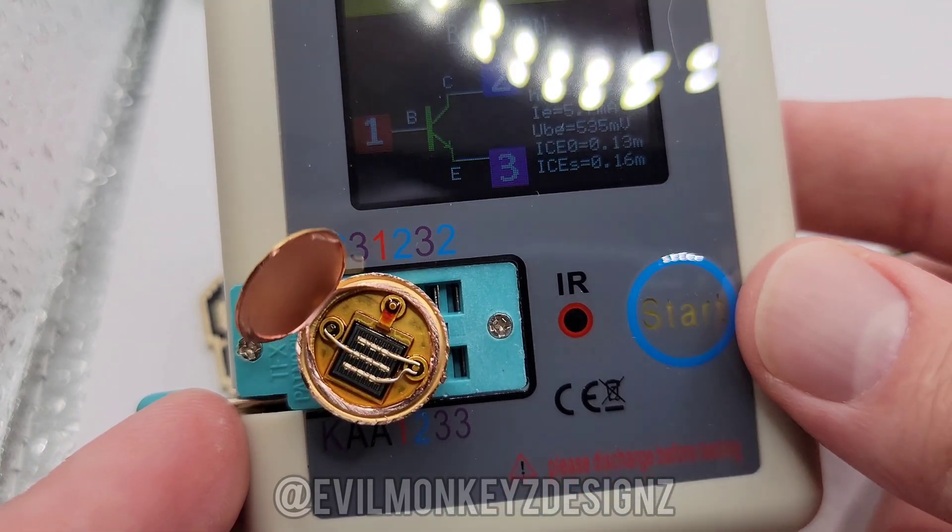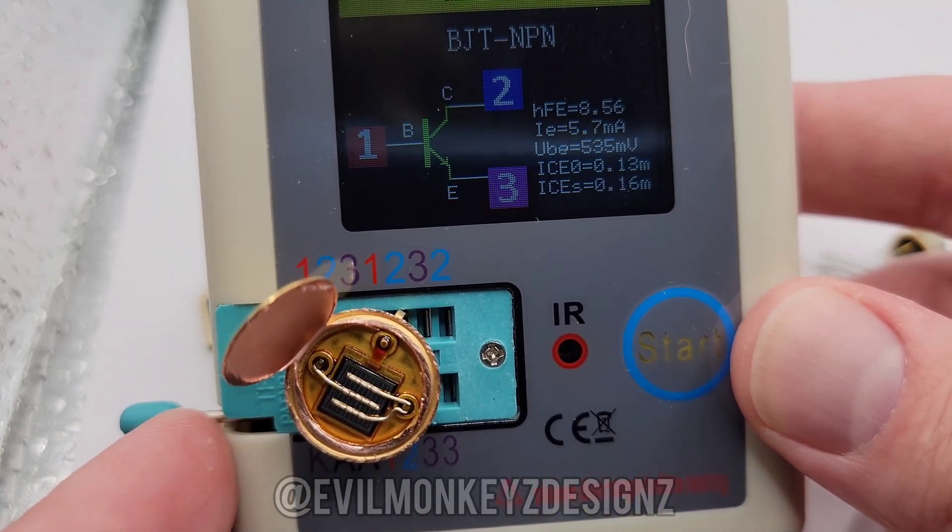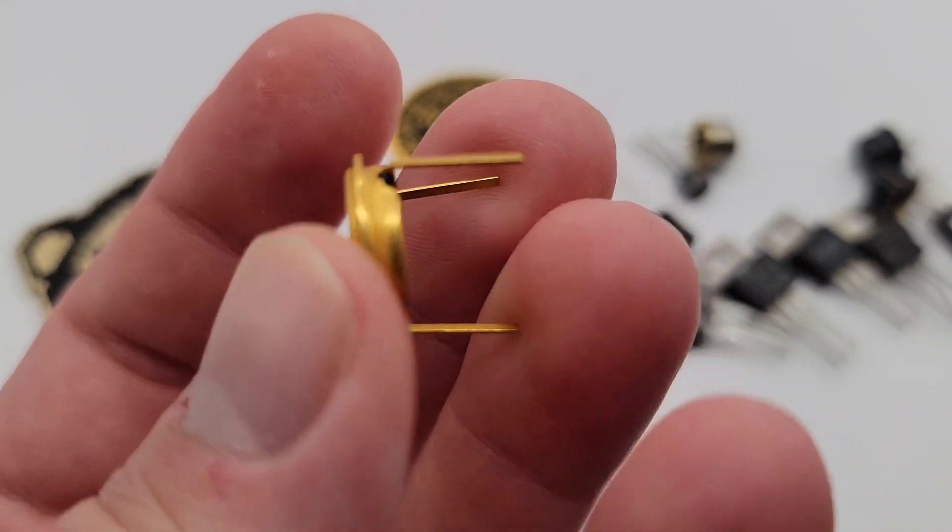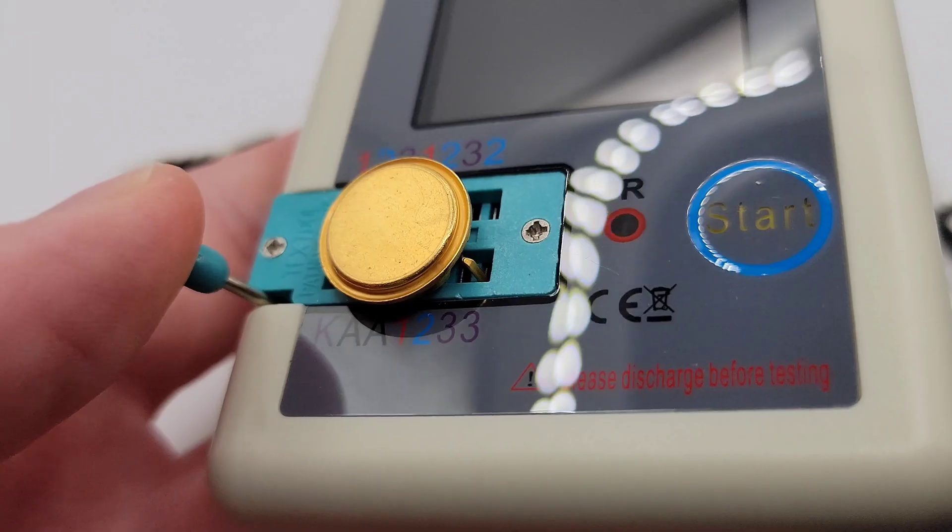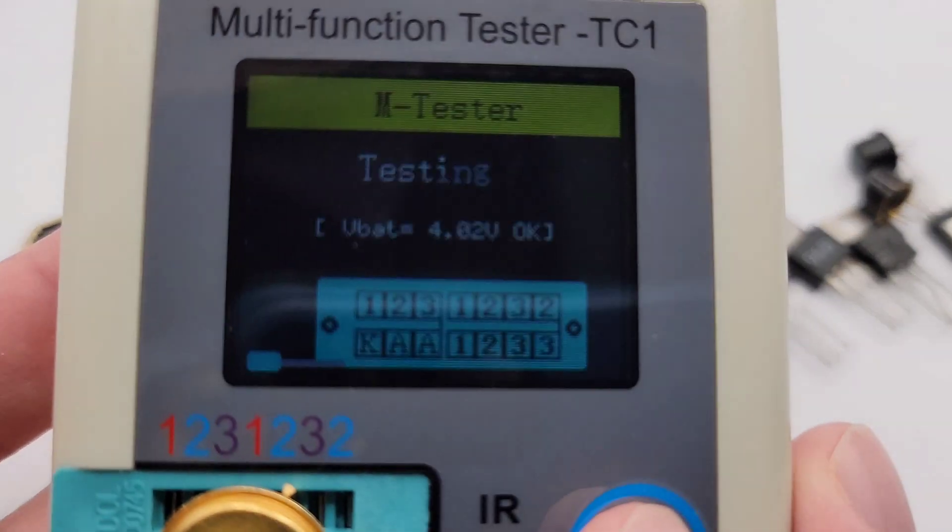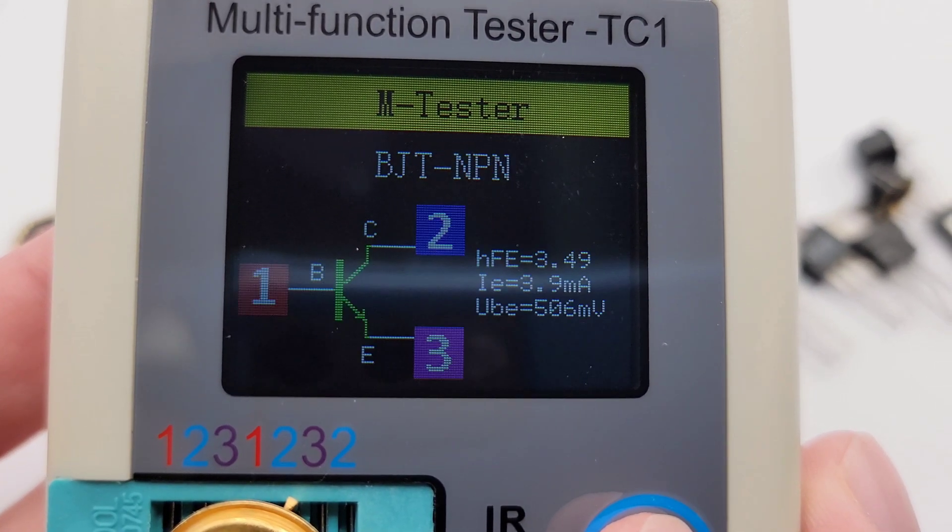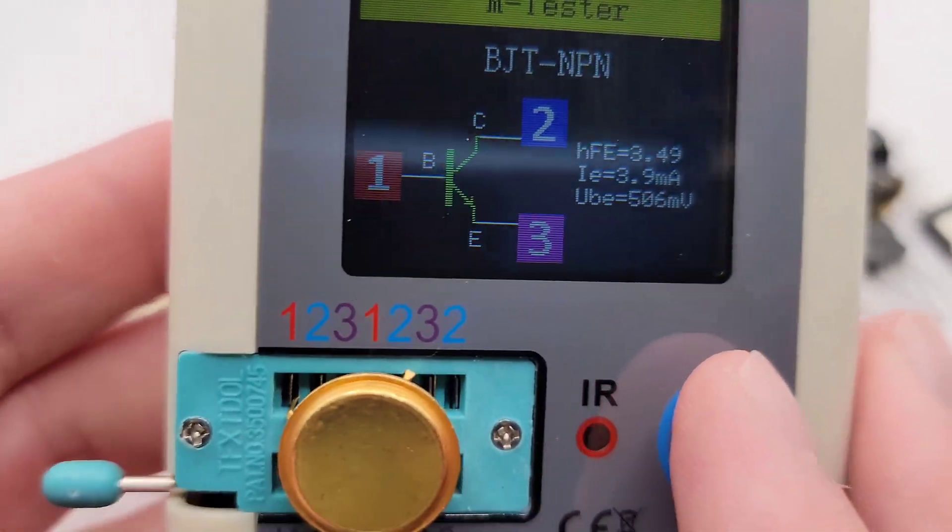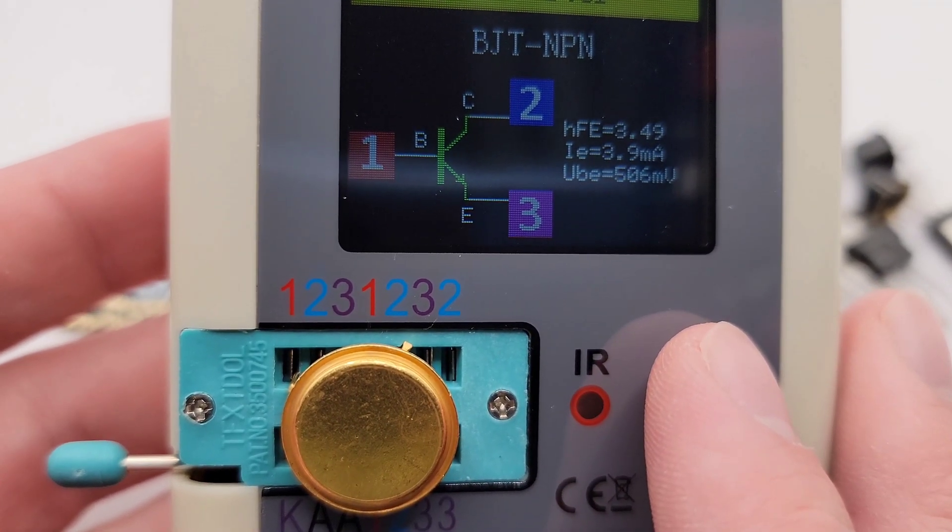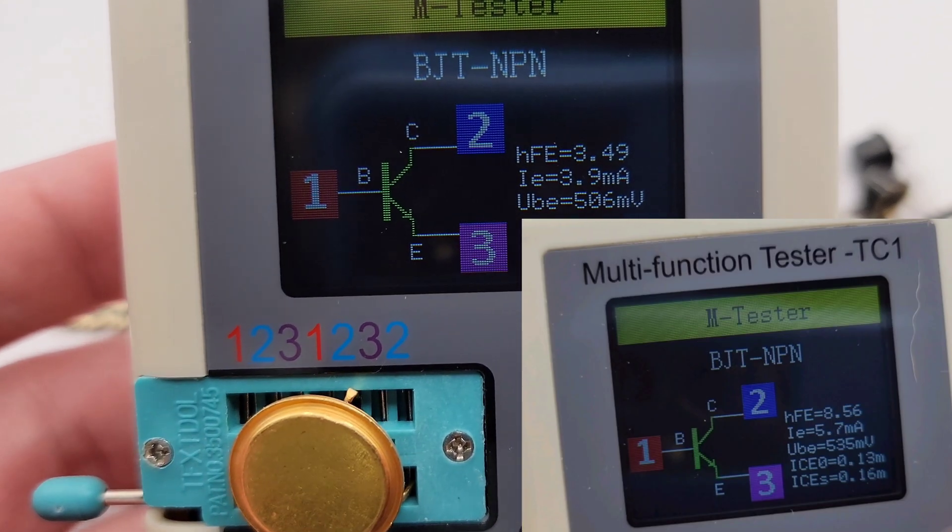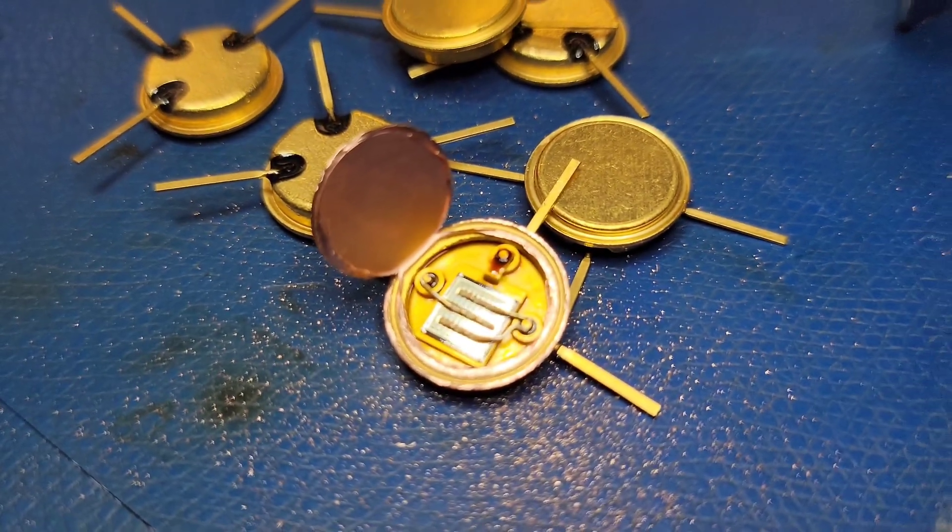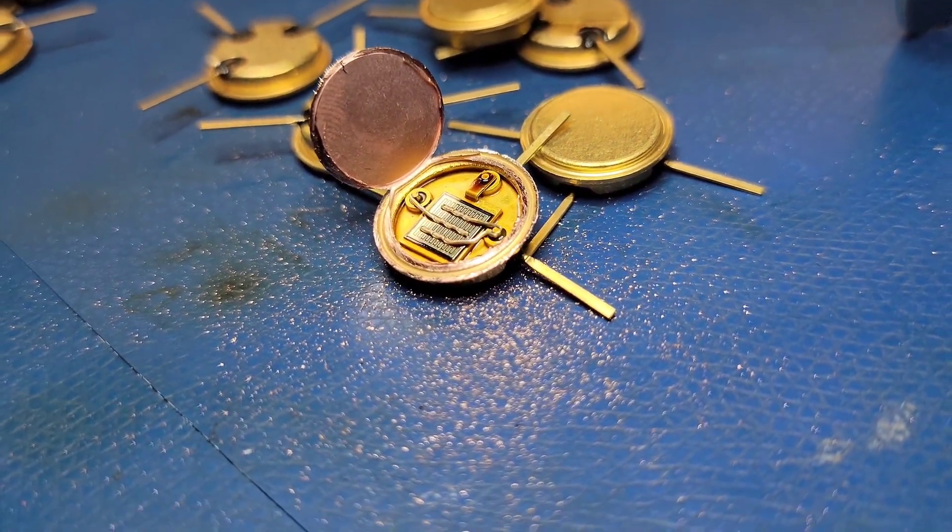I was curious if some of the other transistors in this slot would measure the same, so I opened up a second transistor, put it in the tester, and here are the results. It's still an NPN BJT and has similar values to the first one, but it's missing two values that were on the previous runs. It's possible these are different devices or that I damaged it opening it up. Anyways, I think it's a pretty cool part that I didn't know existed.